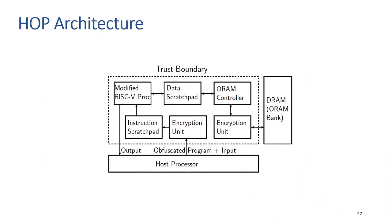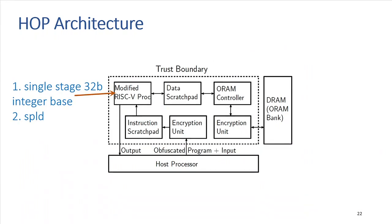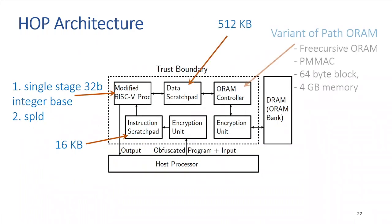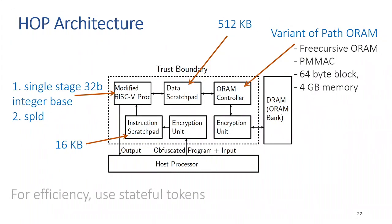Moving to our architecture, we use a modified RISC-V processor with a single-stage 32-bit integer-based pipeline, modified to include a scratch pad load instruction. We use an instruction scratch pad of 16 kilobytes and a data scratch pad of 512 kilobytes. To protect memory access patterns, we use an ORAM controller — a variant of path ORAM called Frequency ORAM. For efficiency, we use stateful tokens.